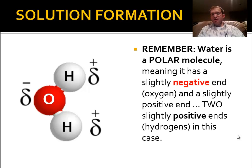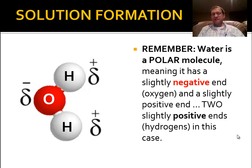In each of the polar covalent bonds of the water molecule, the electrons being shared by the two atoms are pulled more strongly toward the oxygen's end. So the oxygen side of the molecule would be slightly negative, and the hydrogen side would be slightly positive. That gives water almost a magnet personality, with a positive and a negative end, like a magnet has a north and a south.